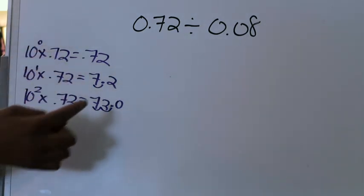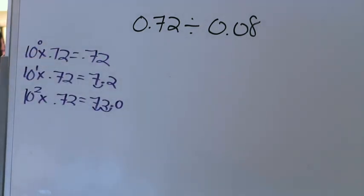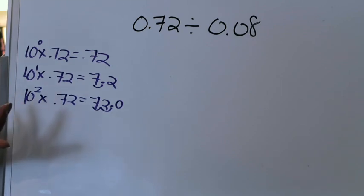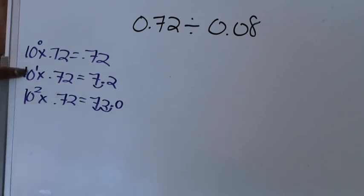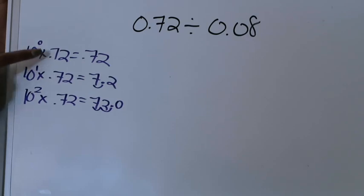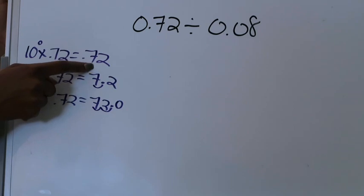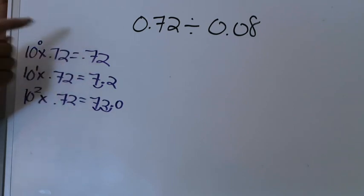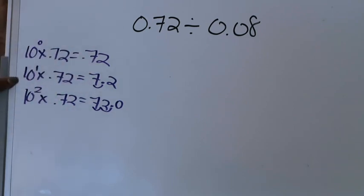The first thing I'm going to do is figure out what power of 10 I need to multiply 72 hundredths by so that it can be read as 72 wholes. I always start with my zero power of 10 because that is the same as multiplying by 1. So the zero power of 10 multiplied by 72 hundredths gives me 72, and that is what I use as my reference number. The first power of 10 multiplied by 72 hundredths is going to move that decimal point one time to the right.